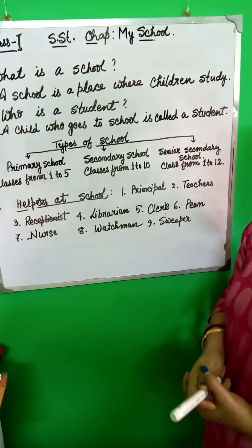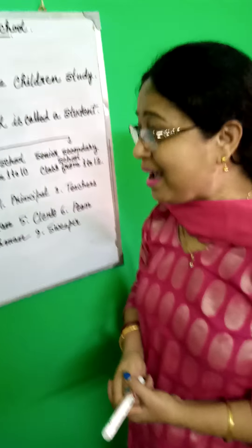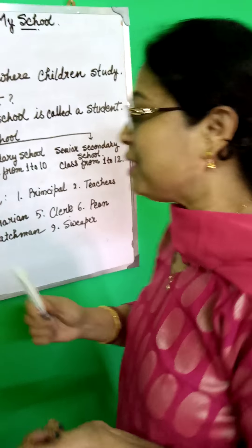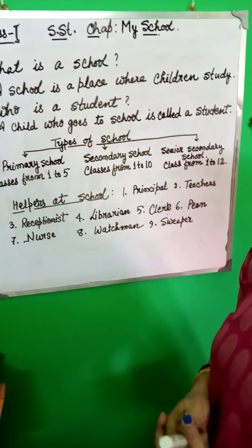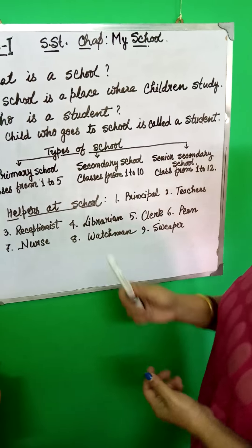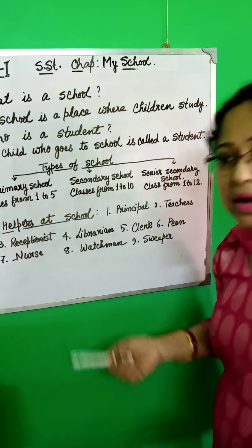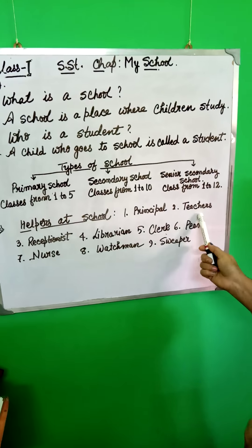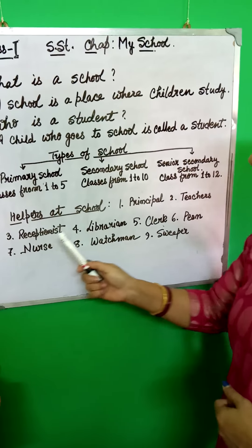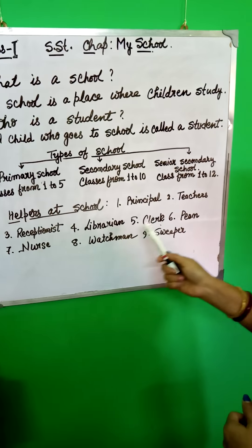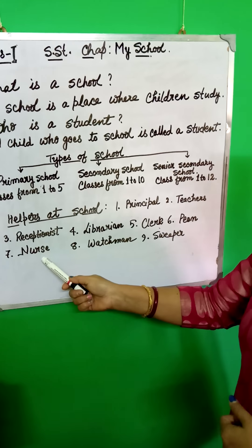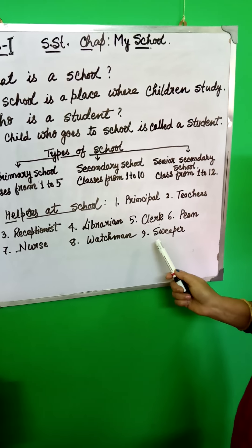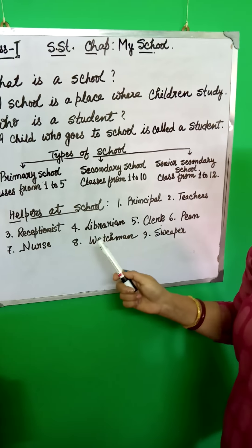We should know the helpers at school — the people who help you in many activities, to perform many activities. Like principal, teachers, receptionist, librarian, clerk, peon, nurse, watchman, and sweeper. You must learn these spellings.